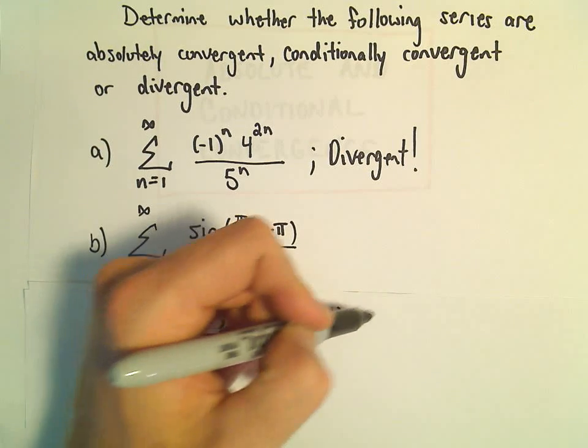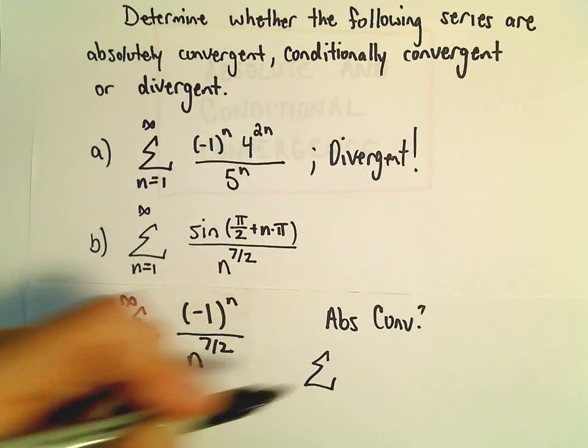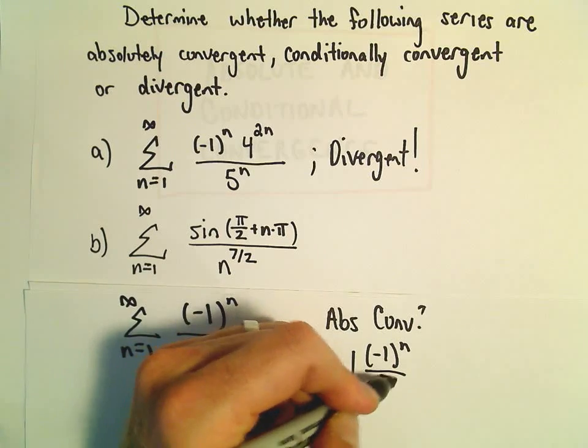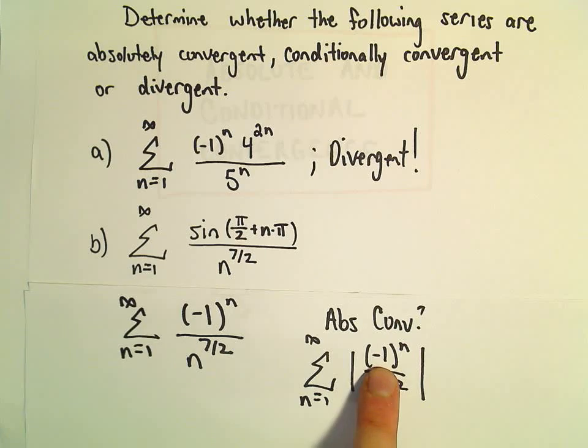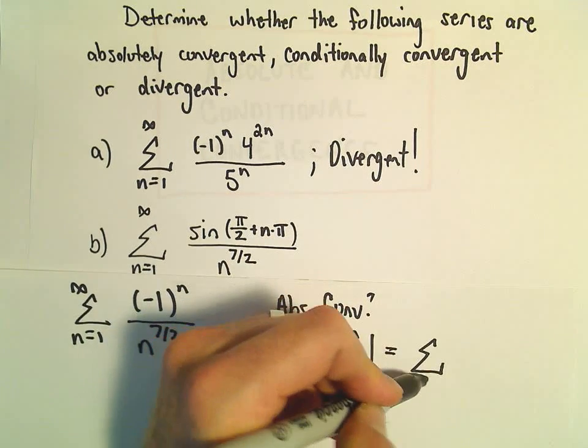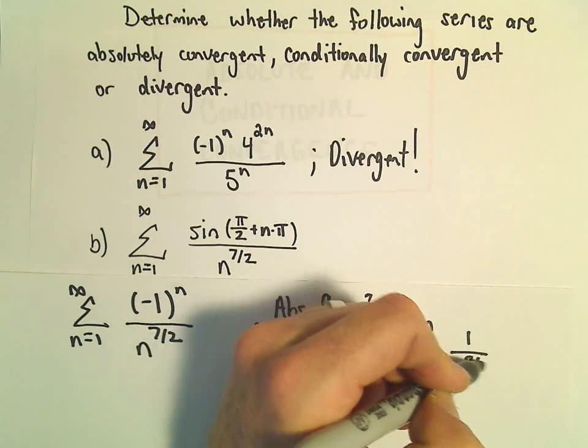So we could ask ourselves, is it absolutely convergent? Well, if we put our series, the formula, inside of absolute value, all that's going to do is just get rid of the alternating part. So really, this is equivalent to the series n equals 1 to infinity of 1 over n to the 7 halves power.